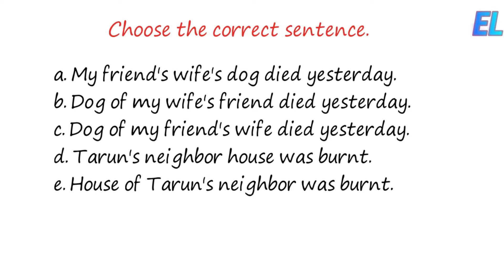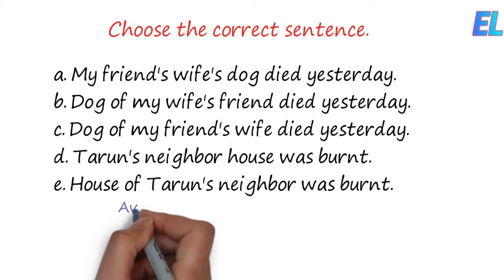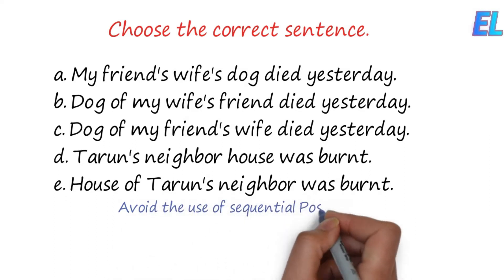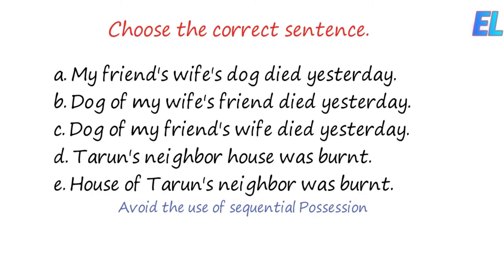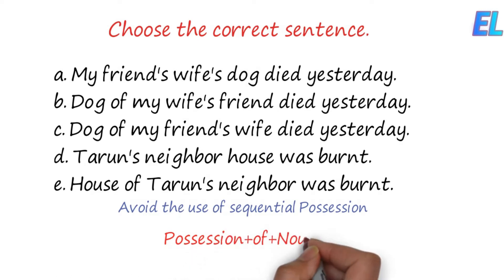Let's see the first one. Sequence of possession — if people don't know what to do, it's like this. We have to avoid the use of sequential possession. We have to remember this one.